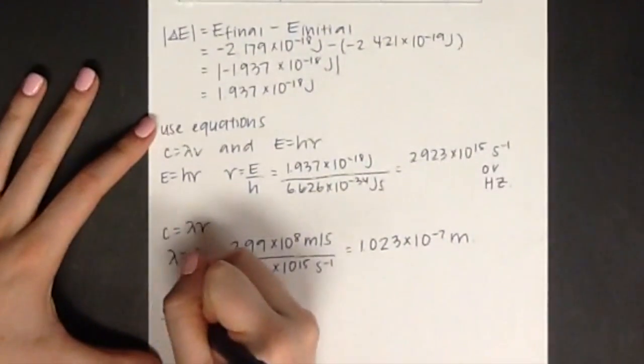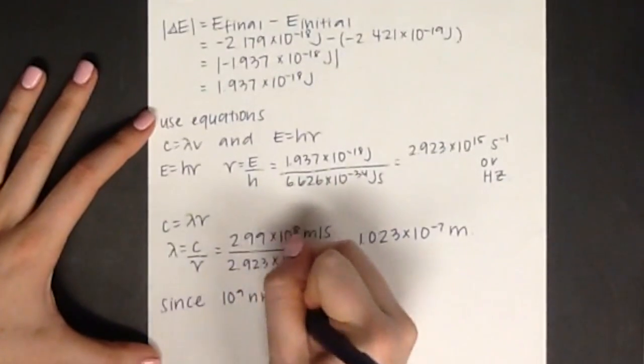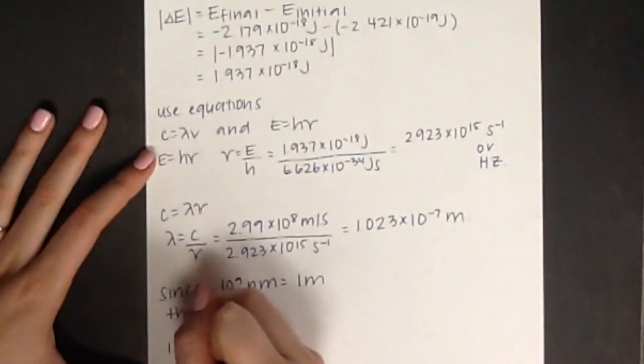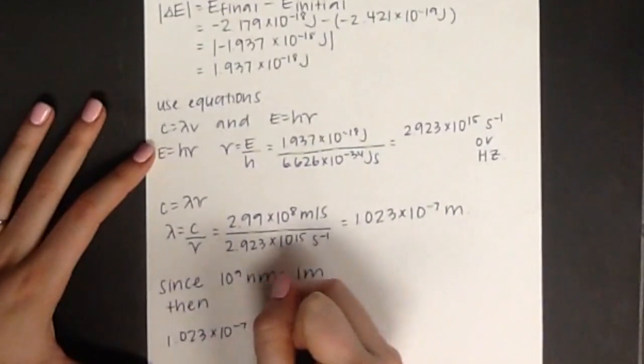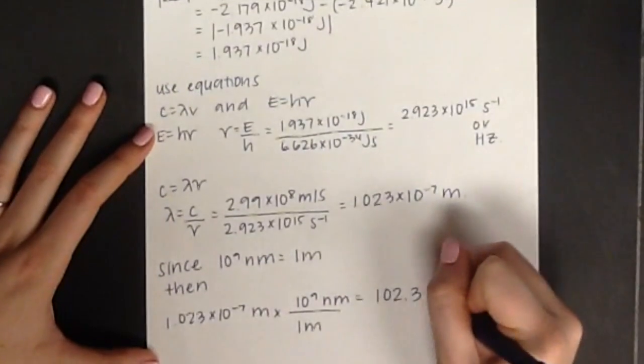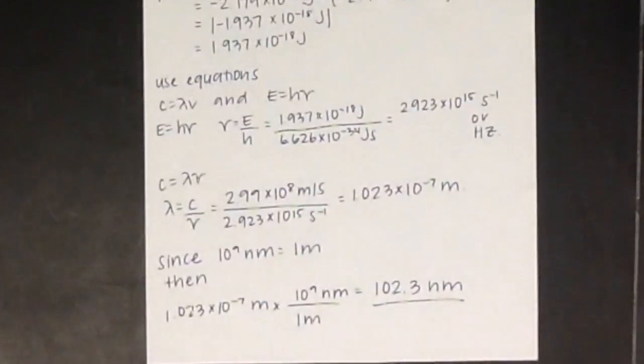To do this, we will multiply 1.023 times 10 to the negative 7 by 10 to the ninth nanometers. Our final answer is 102.3 nanometers. When doing these problems, remember to use the correct units, and as always, use the correct number of significant digits.